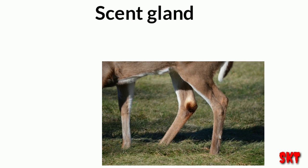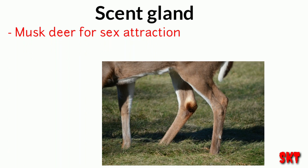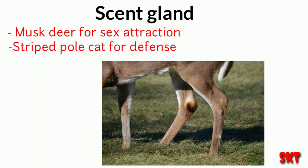The next one is the scent gland. These glands produce a scent or smell which is helpful for protection or sex attraction. For example, in musk deer, these glands produce a smell which helps in sex attraction, and in the striped polecat, these glands help for defensive mechanisms.